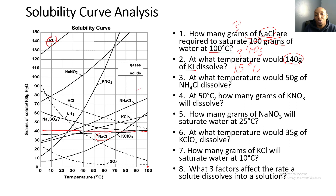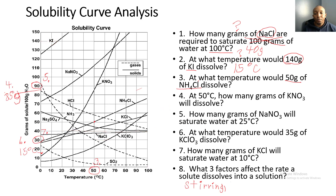Ladies and gentlemen, we did problems one and two together. You're going to independently work on problems three through eight on your own. For number three: at what temperature would 50 grams of NH₄Cl dissolve? We have our 50 grams and bring it across until it hits NH₄Cl, then bring it down — that's 50 degrees Celsius.